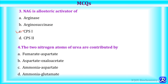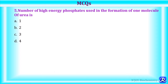MCQ 4: Two nitrogen atoms of urea are contributed by — fumarate and aspartate, aspartate and oxaloacetate, ammonia and aspartate, or ammonia and glutamate? Answer: ammonia and aspartate (option C) — the first nitrogen comes from ammonia in reaction 1, and the second from aspartate in reaction 3. MCQ 5: The number of high-energy phosphates used in formation of one molecule of urea is 1, 2, 3, or 4? Answer: 4 (option D) — two ATPs in reaction 1, plus one ATP cleaved to AMP and pyrophosphate (further cleaved to 2 inorganic phosphates) in reaction 3, equivalent to four high-energy phosphate bonds.